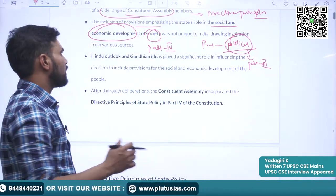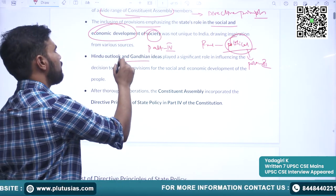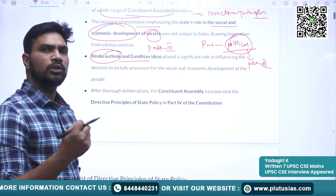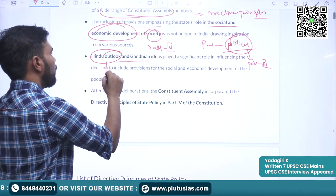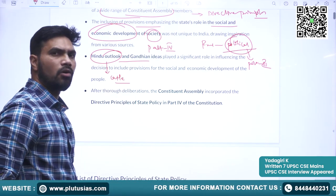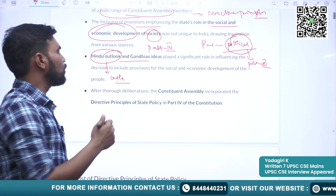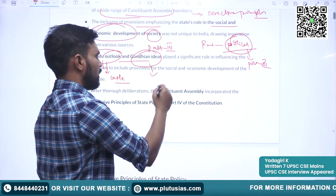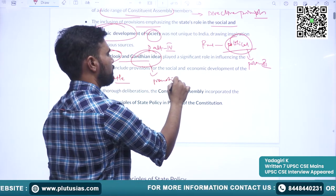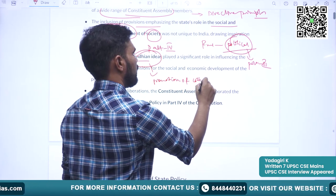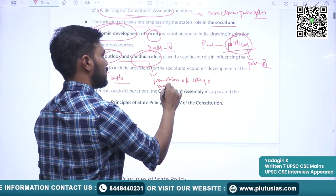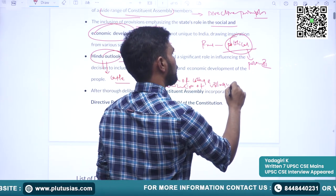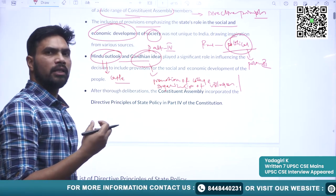Also remember that the DPSP resembles the Hindu outlook. Some principles can be traced to Hinduism — for example, protection of cattle and draught animals. Certain Gandhian ideas are also there, for example, promotion of cottage industries and organization of village panchayats. These reflect the Gandhian ideology.